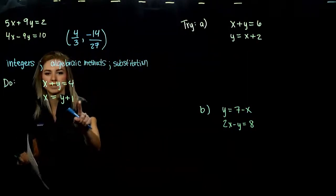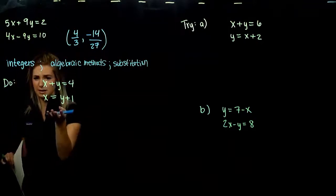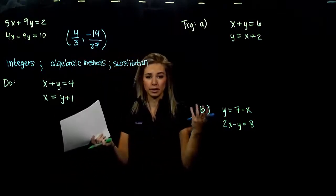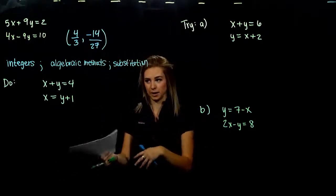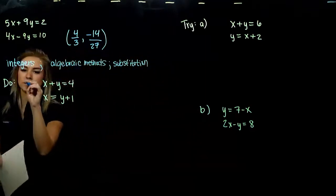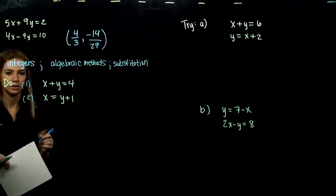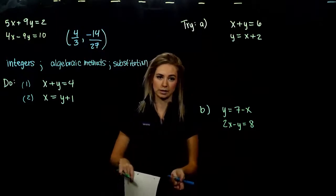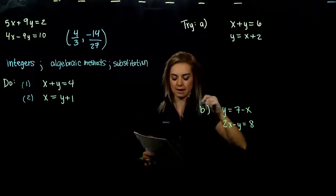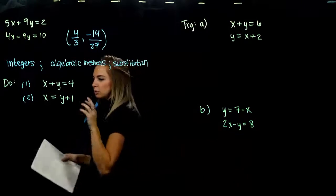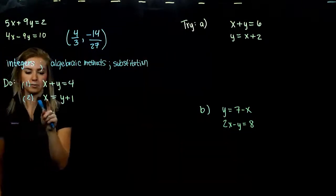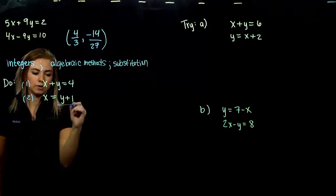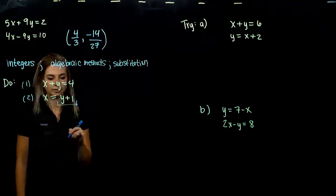We're going to look at this first system and solve it algebraically. This one wouldn't be so bad to graph since all our constants are integers, but we want to move toward algebraic methods. I'm going to label each equation: the first one is equation 1, the second one is equation 2, so for notation purposes we can reference which equation we're plugging into which.